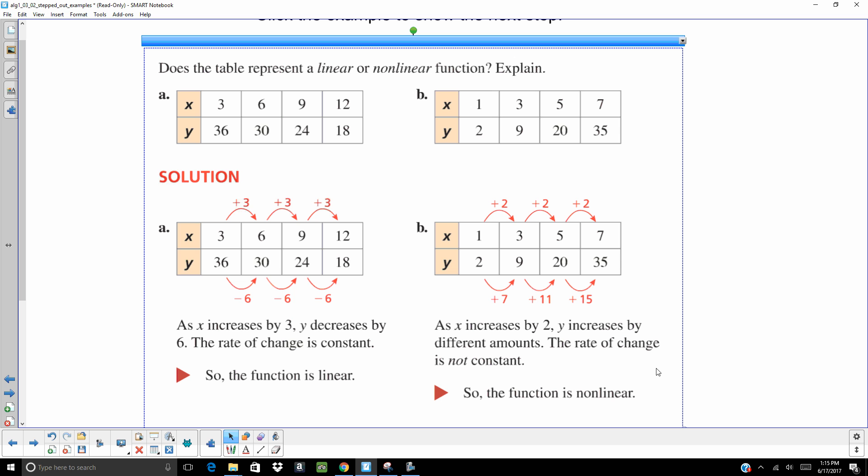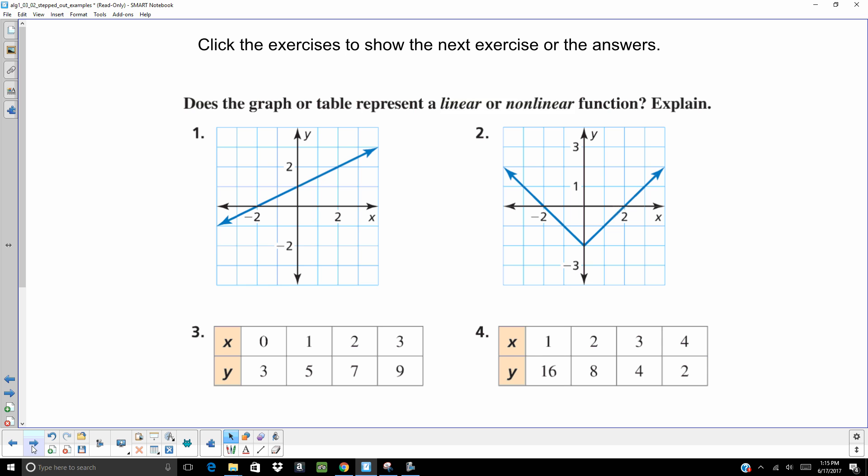Did anybody think of another way to do this? Maybe graph those ordered pairs and just visually check to see if that was linear or nonlinear? That is another approach that you could take, especially if you're a real visual person. You might want to sketch that graph really quick. So take a second, hit pause, try these four on your own. When you think you have the answers, hit play and check yourself.